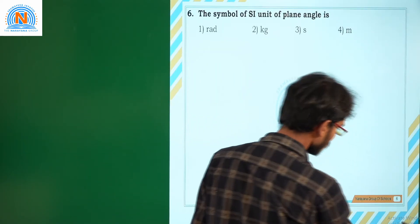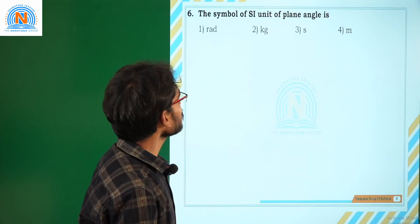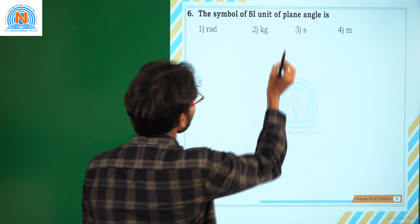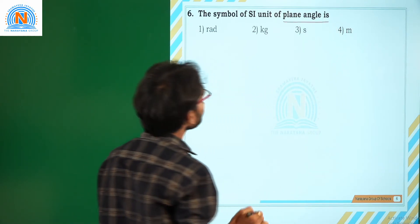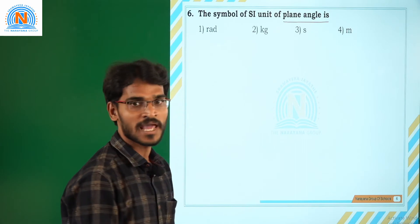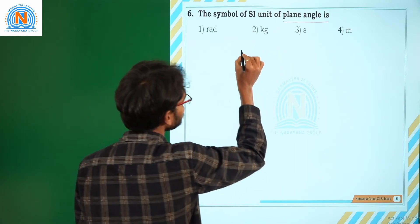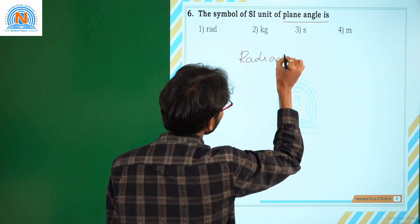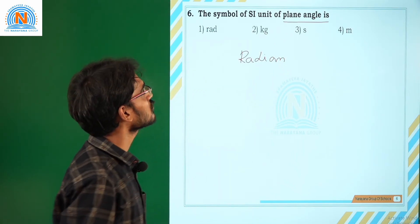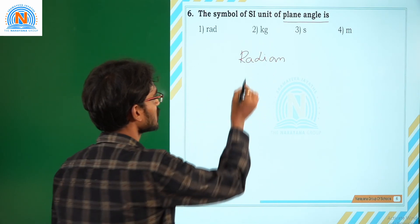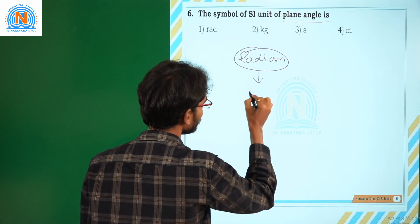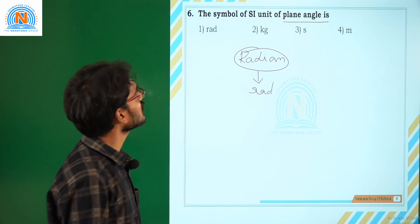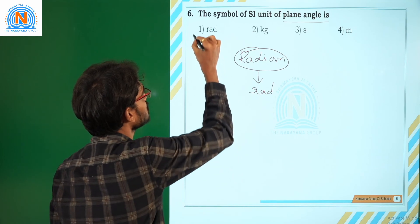Next, move to another question. The symbol of SI unit of plane angle is — he is asking the symbol of the SI unit of plane angle. Plane angles are measured in terms of radians, but he is not asking for the full form of the unit, he is asking for the symbol. The symbol of the unit is rad. So the correct option for this question is 1.